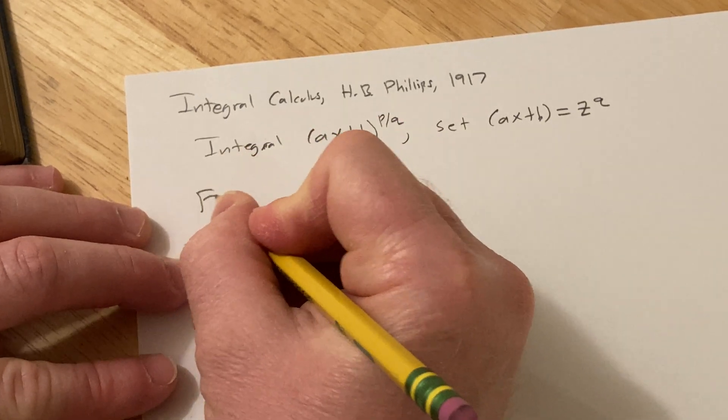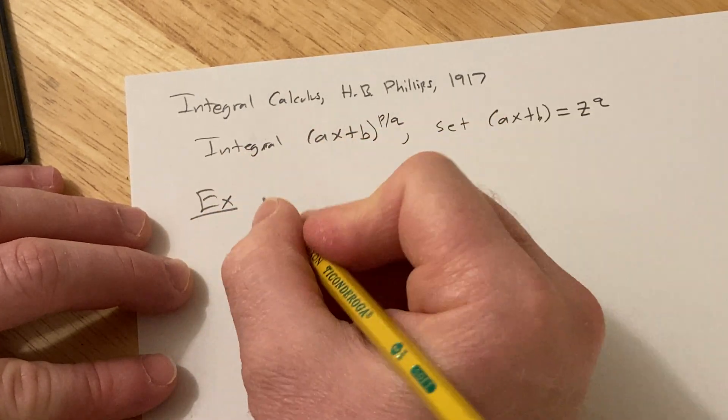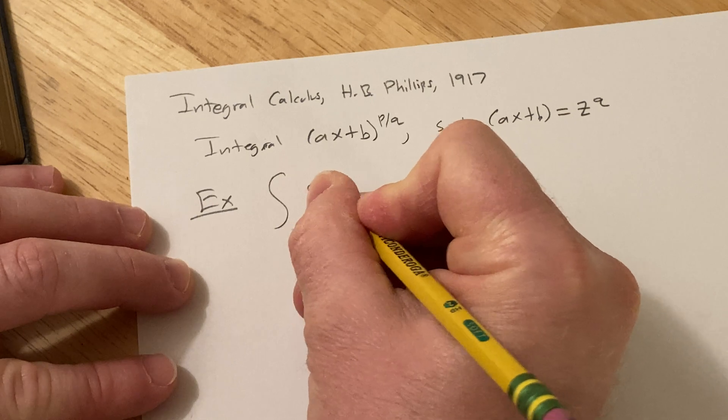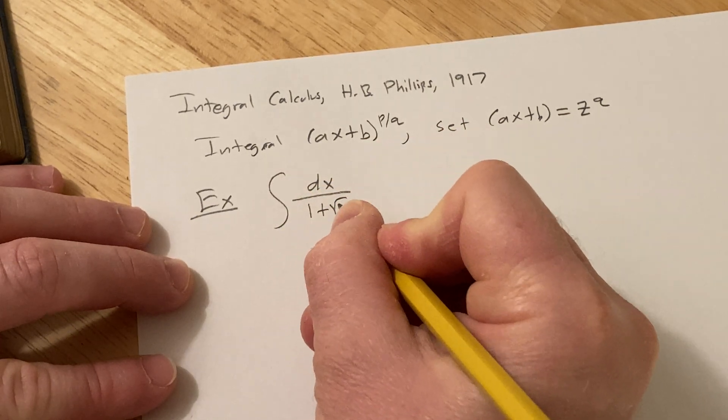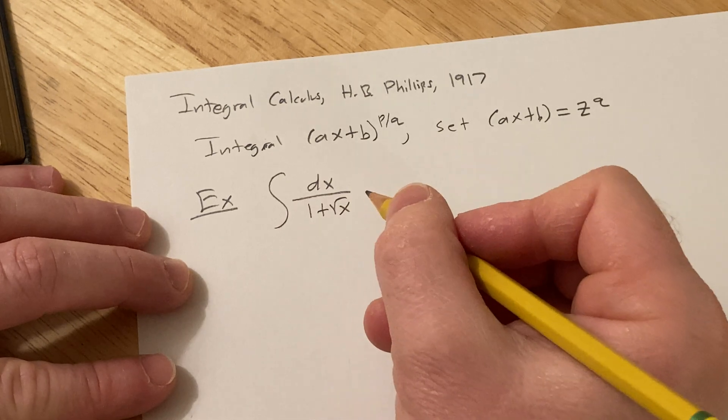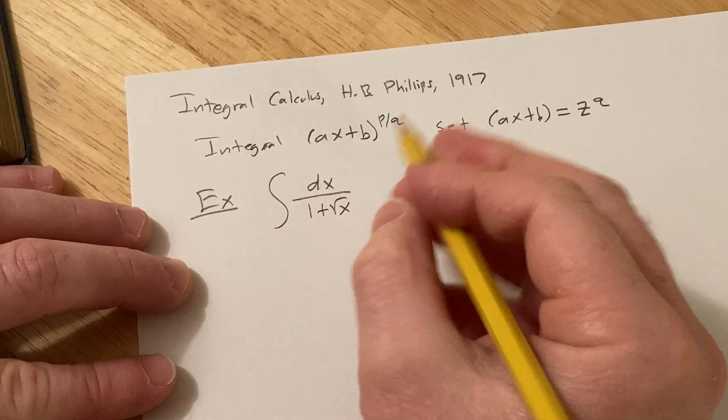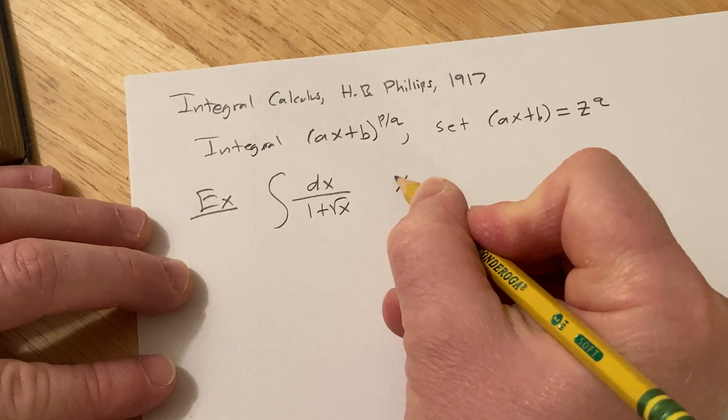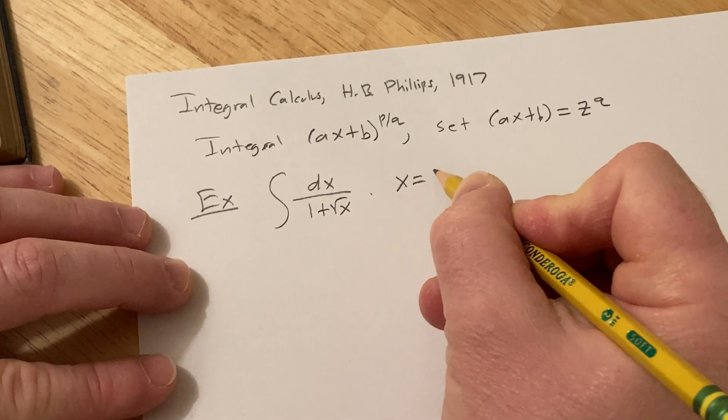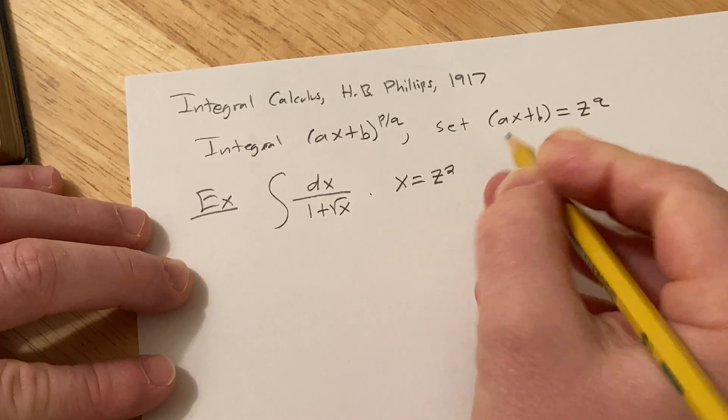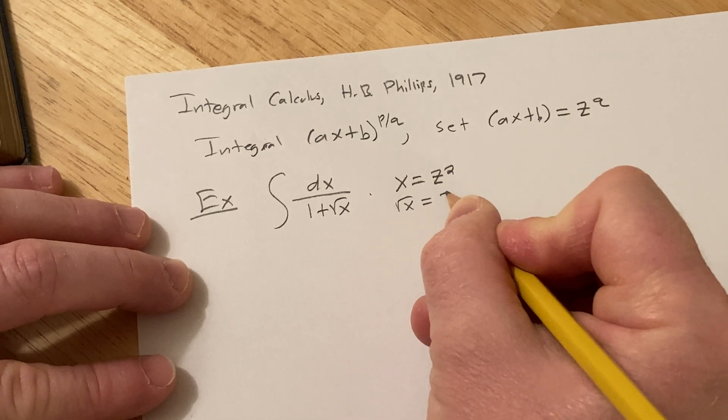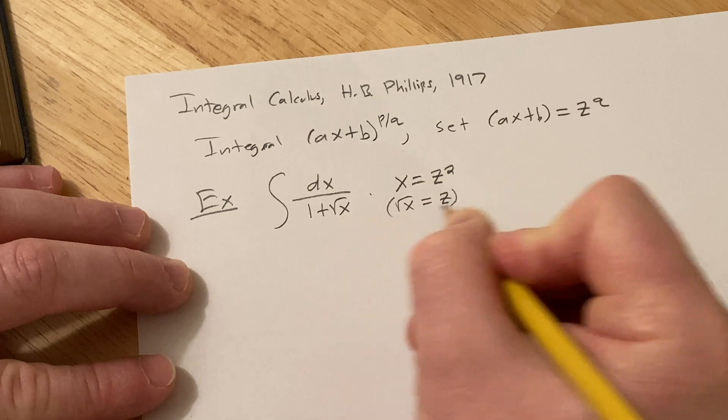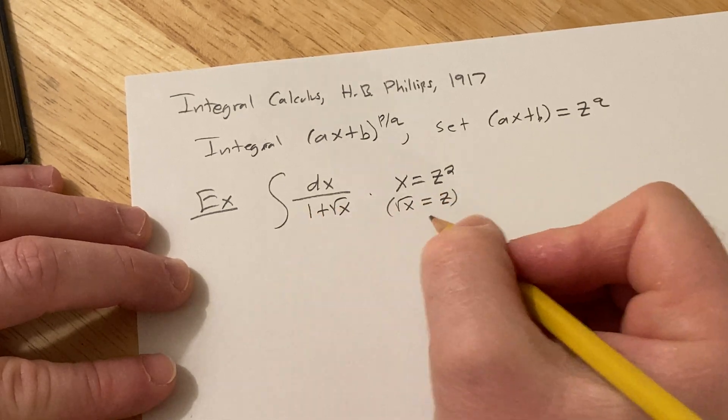So let's do an example here. We have the integral of dx over 1 plus the square root of X. In this specific example, we're going to use this idea. We'll simply set X equal to Z squared, and so when you do that, the square root of X is actually just Z. I'll put this in parentheses down here because we will need this in our substitution.